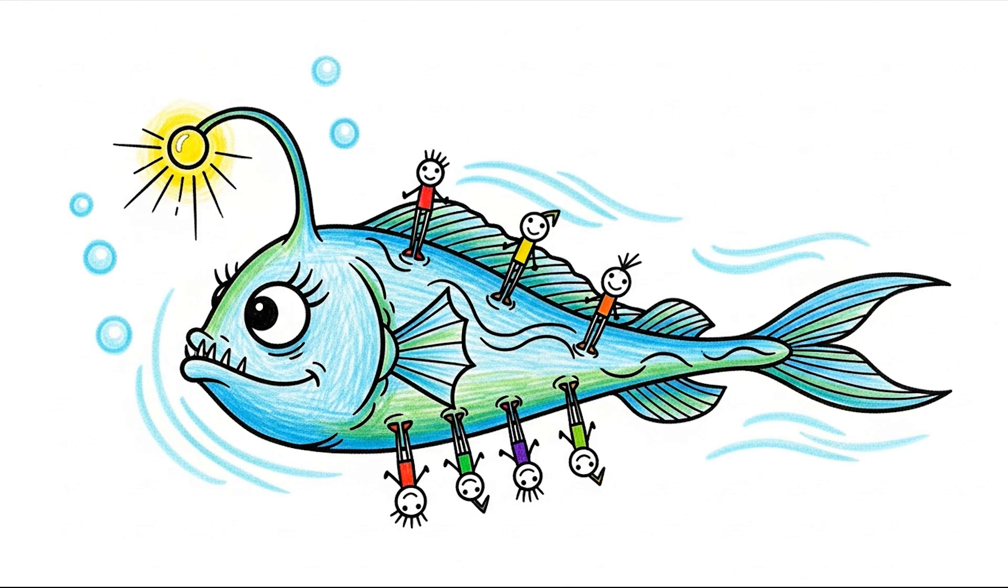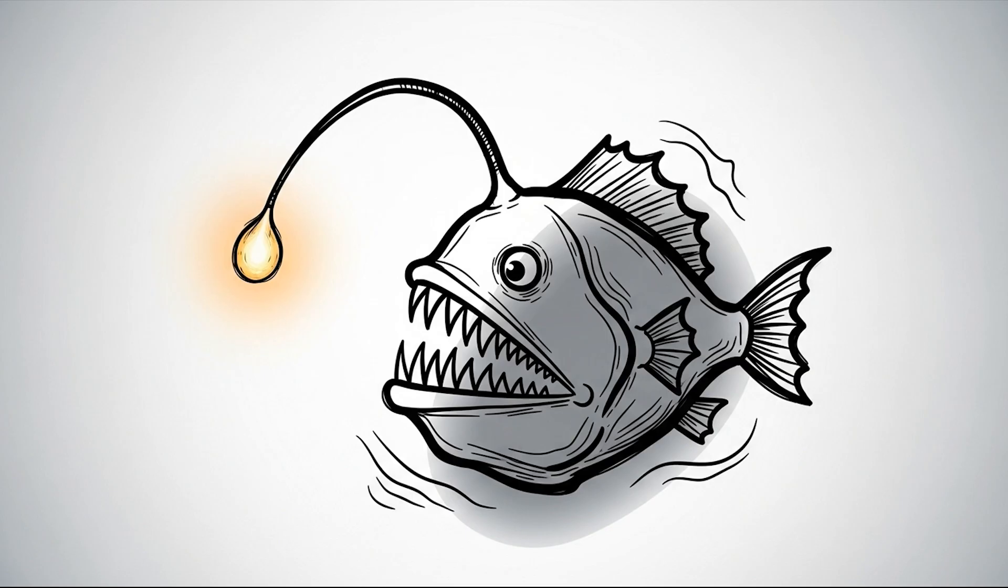She can collect multiple males this way, like a twisted charm bracelet, swimming around with former partners stuck to her like living tattoos. These fish are built for the dark, with bodies so black they absorb 99.9% of light, the ultimate stealth suit.